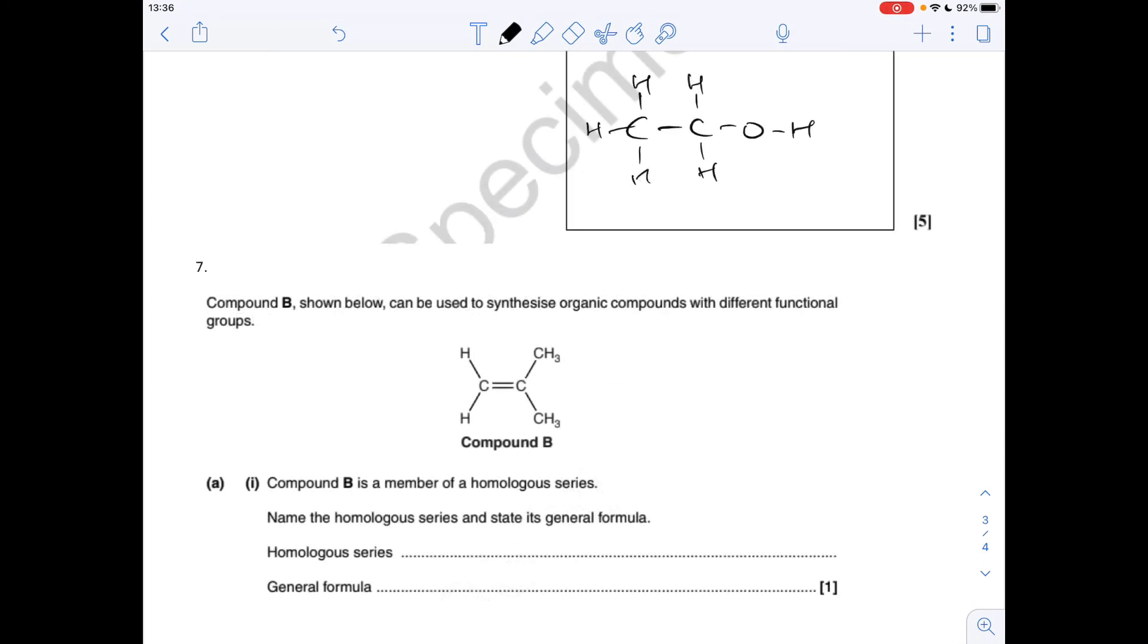Question 7, name the homologous series and state the general formula for compound B. So compound B is obviously an alkene, it's got a carbon-carbon double bond, and the general formula for these is CnH2N.